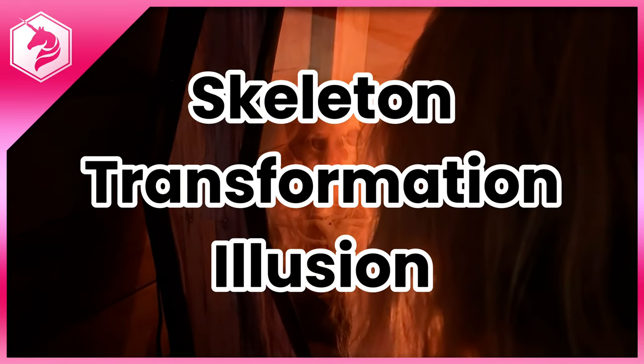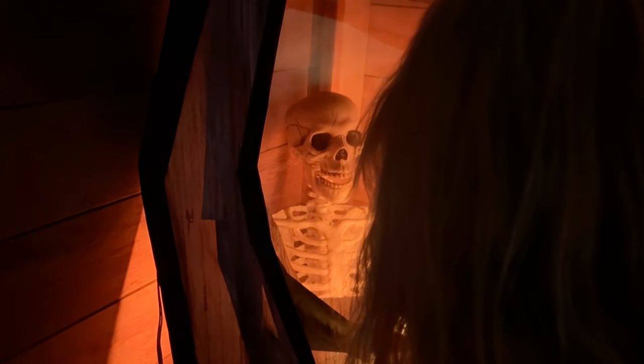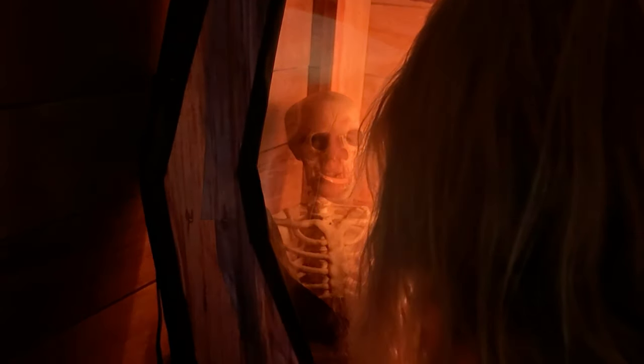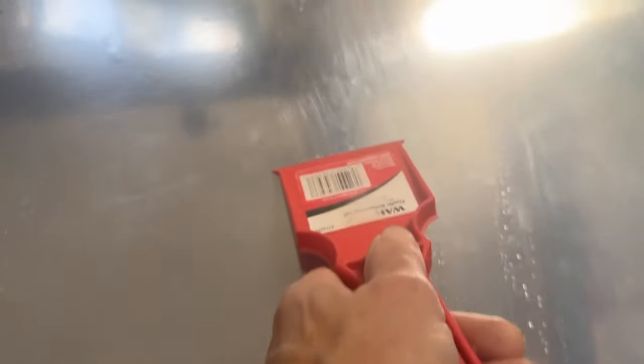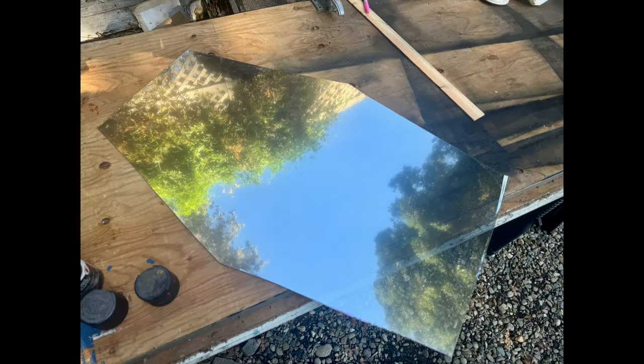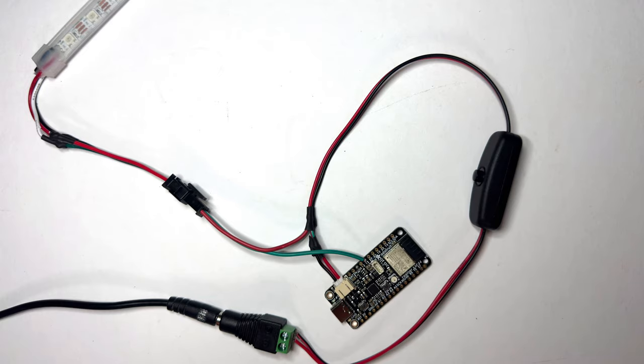Create a creepy Halloween illusion that transforms your face into the face of a monster. This illusion uses a two-way mirror that hides inside a prop coffin and a Feather ESP32 running WLED. We'll show you how to hook up all the lights to the scariest illusion ever.